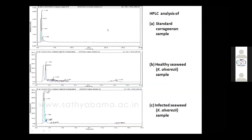In the HPLC analysis, the first graph shows the standard carrageenan sample with peaks at 1.193, 0.87 — four peaks visible. In the healthy seaweed, we can see many peaks, including in the same area as the standard, confirming carrageenan presence. But in the infected seaweed, we don't see many peaks, and some sharp peaks suggest breakdown of carrageenan molecules into different smaller derivative molecules. You can see the difference between the healthy, infected, and standard samples.